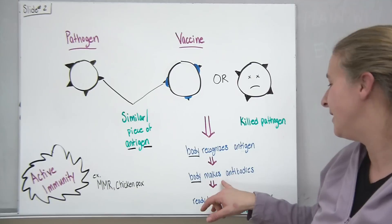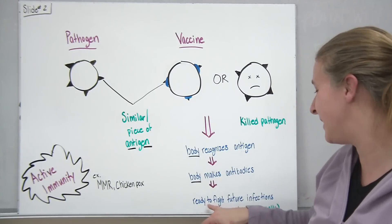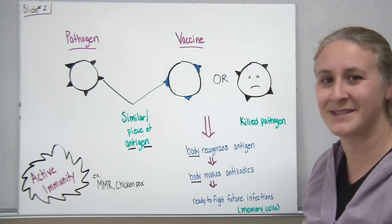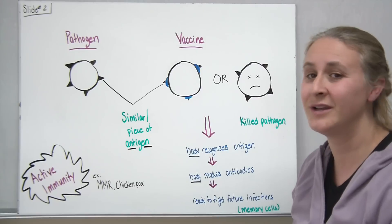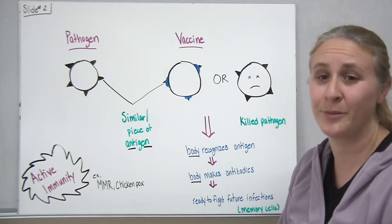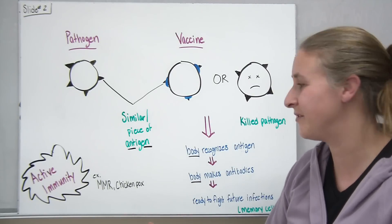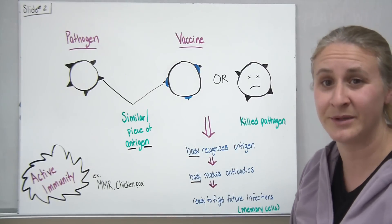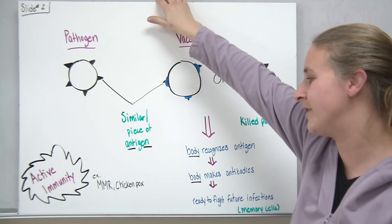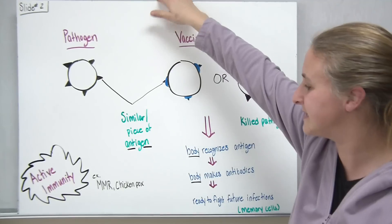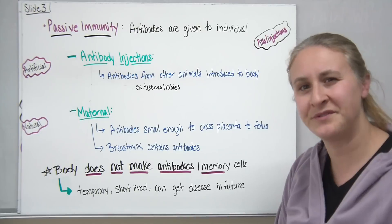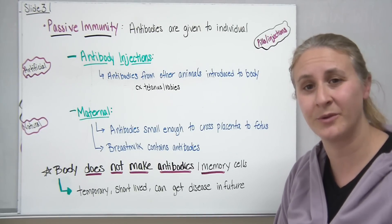The body recognizes the protein or antigen on the surface of the cell, makes antibodies, and those antibodies will be ready to fight future infections and help make memory cells so the body can recognize the pathogen again in the future. This is called active immunity — your body actually created its own antibodies to fight off a pathogen, even if that pathogen was weakened or dead. Examples include the MMR vaccine (measles, mumps, and rubella) and the chickenpox vaccination.